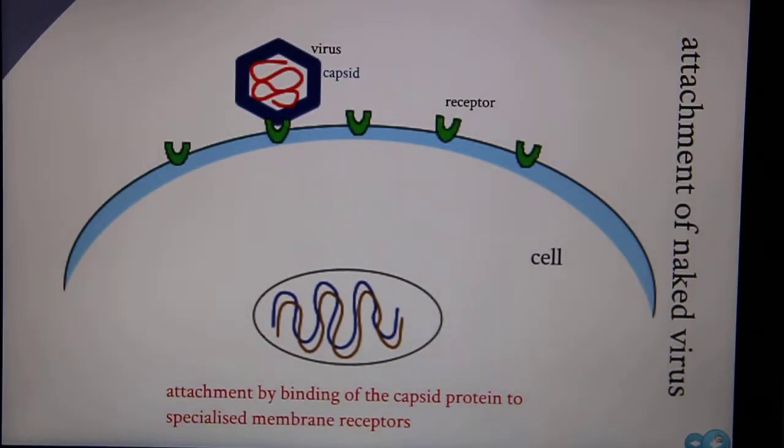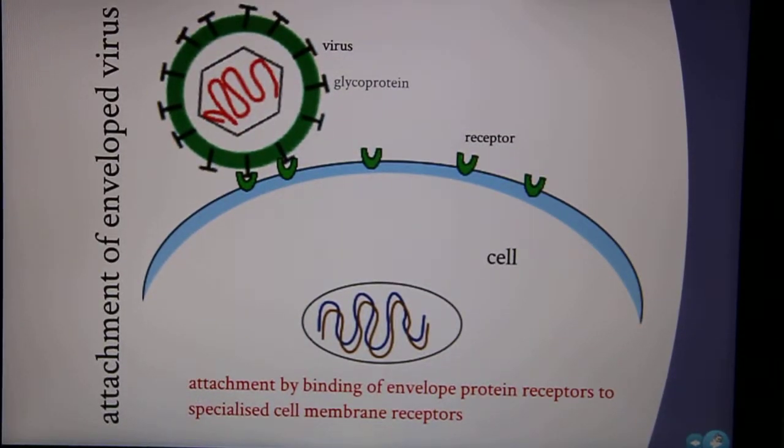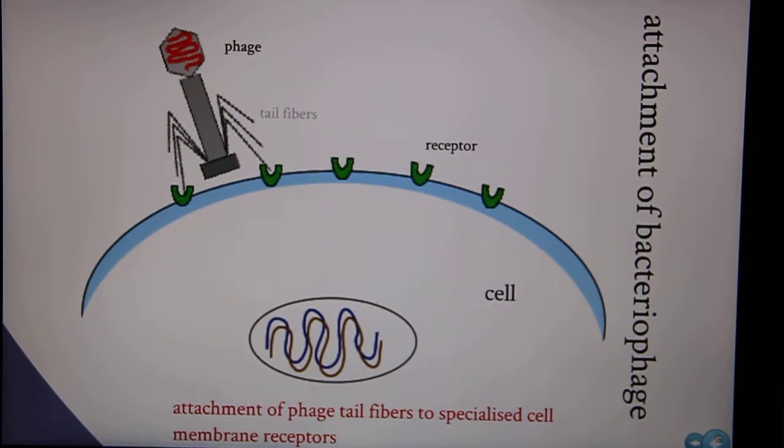Naked viruses achieve attachment by binding of their capsid to special membrane receptors. Envelope viruses use protein receptors on the envelope to bind to cell membrane receptors. Bacteriophages attach to membrane receptors using their tail fibers.